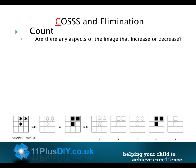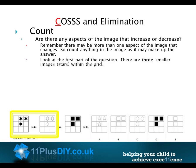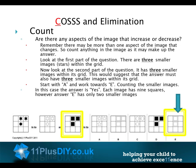Count: are there any aspects of the image that increase or decrease? Remember, there may be more than one aspect that changes, so count anything in the image. Look at the first part of the question — there are three smaller images, stars, within the grid. Now look at the second part — it also has three smaller images within its grid. This suggests the answer must also have three smaller images. Each image has nine squares; however, answer E has only two smaller images.